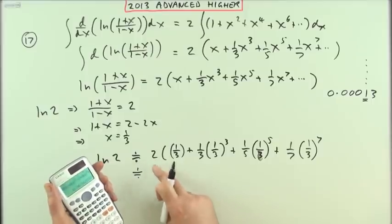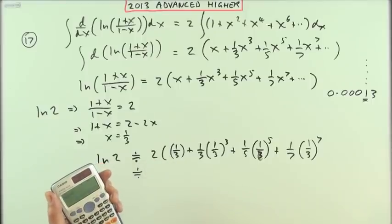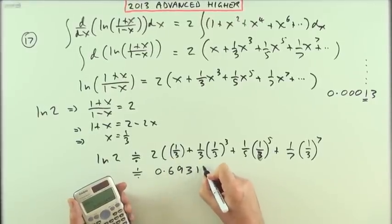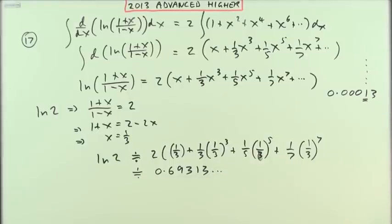Multiply it all by two and I've got 0.69313 and so on, which of course I'm not justified in going as far as that. ln(2), but I know any extra terms wouldn't affect that because they would go beyond the fourth decimal place.